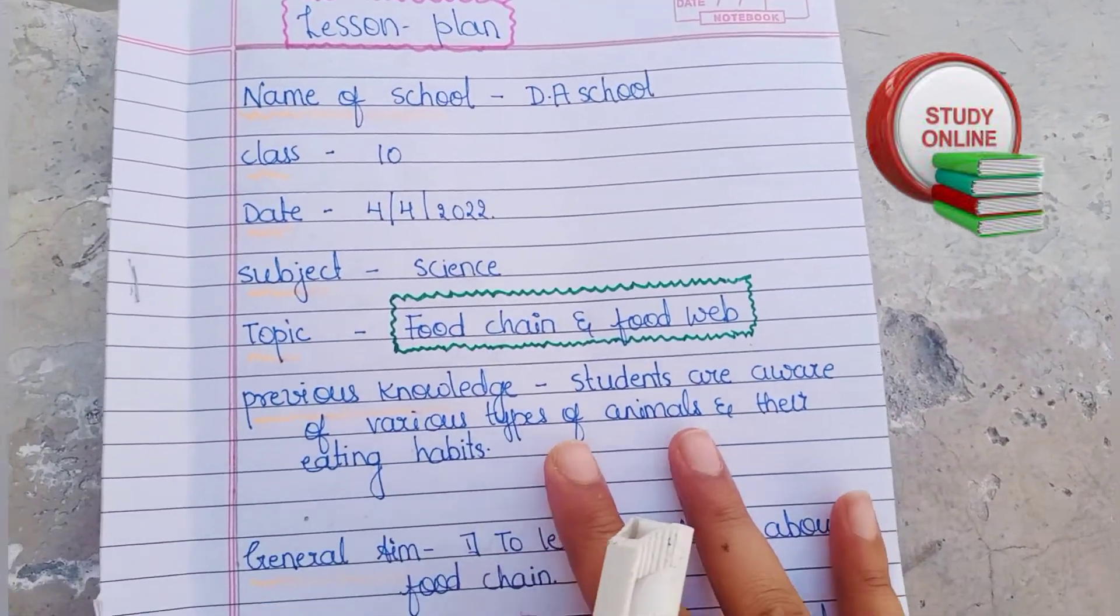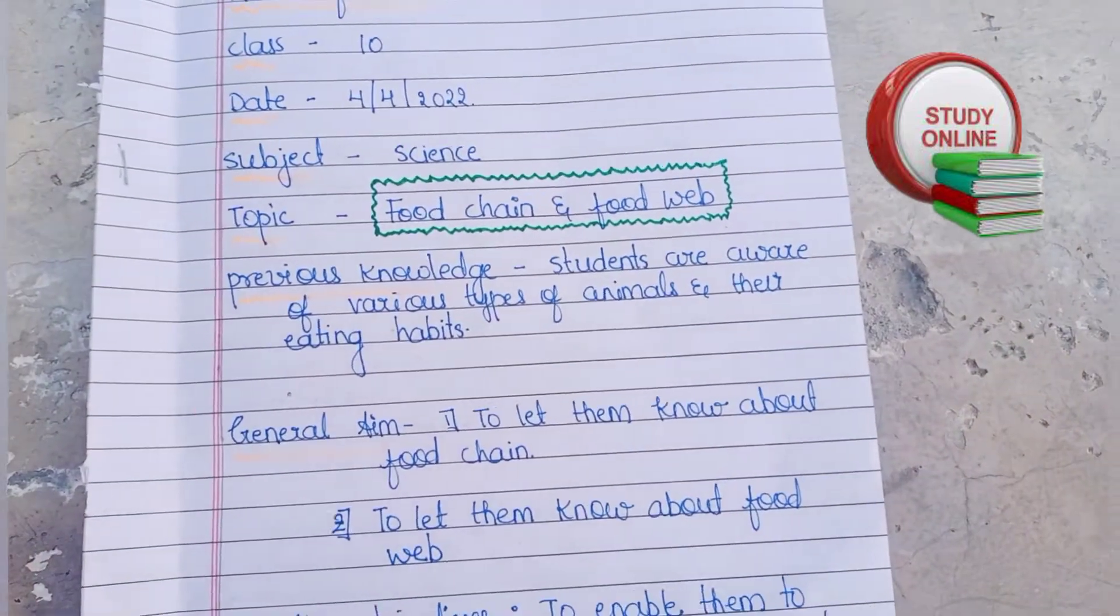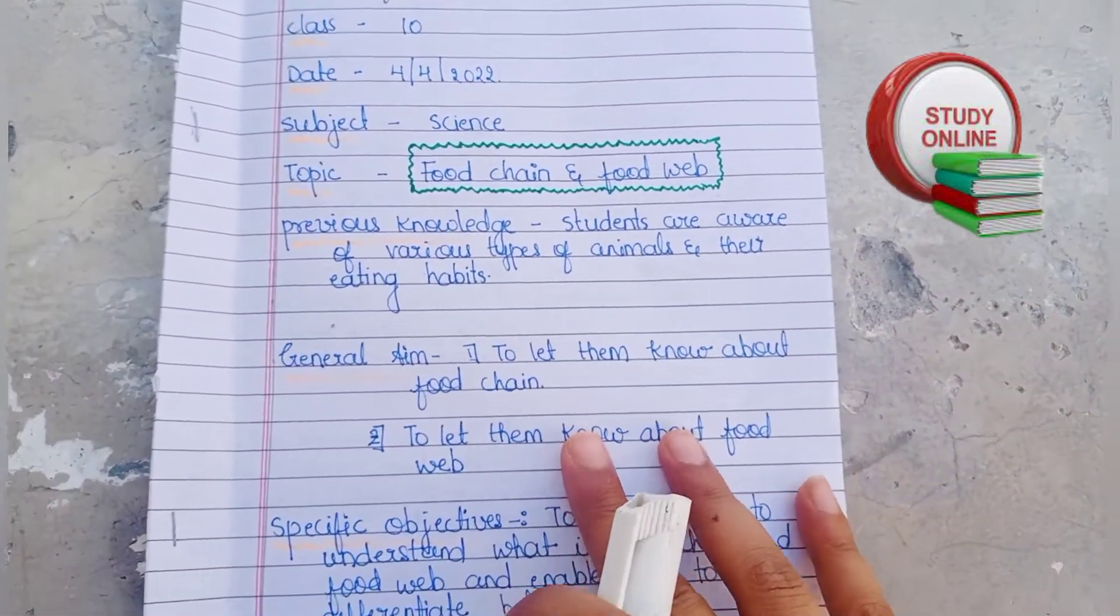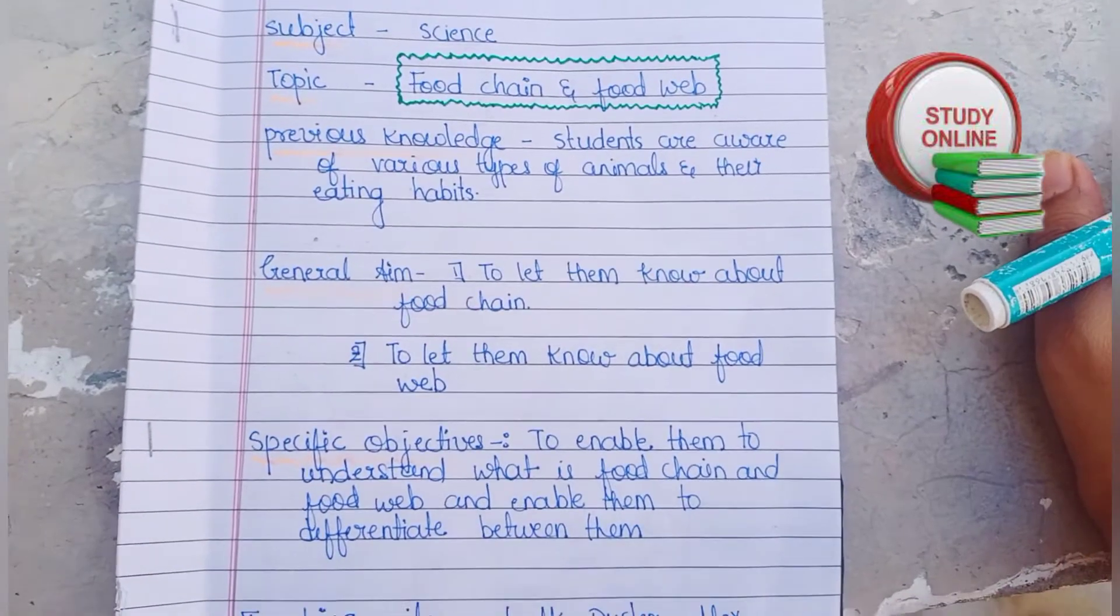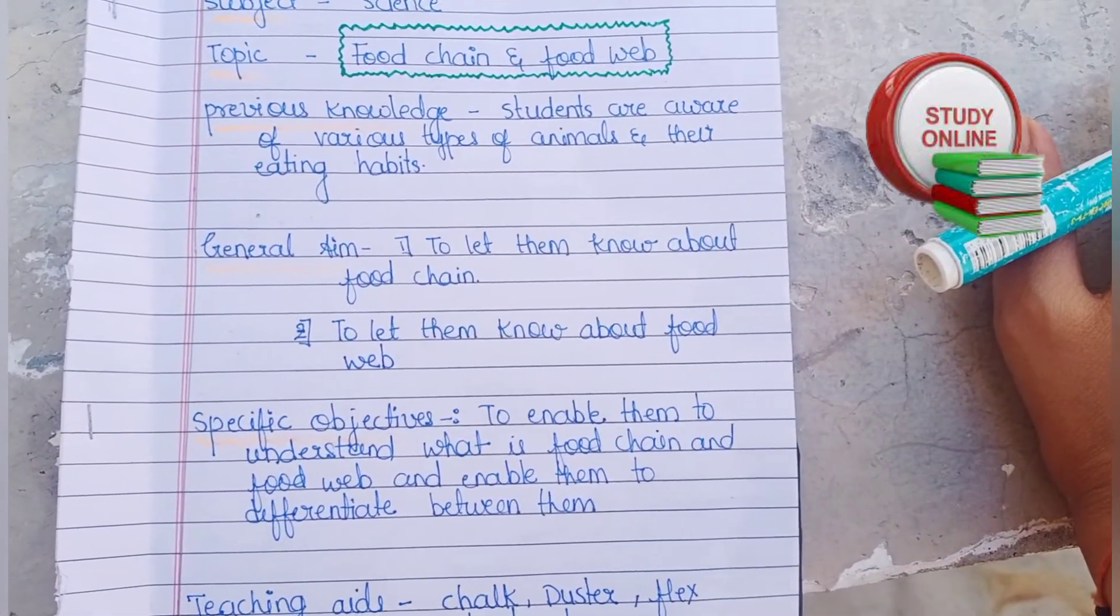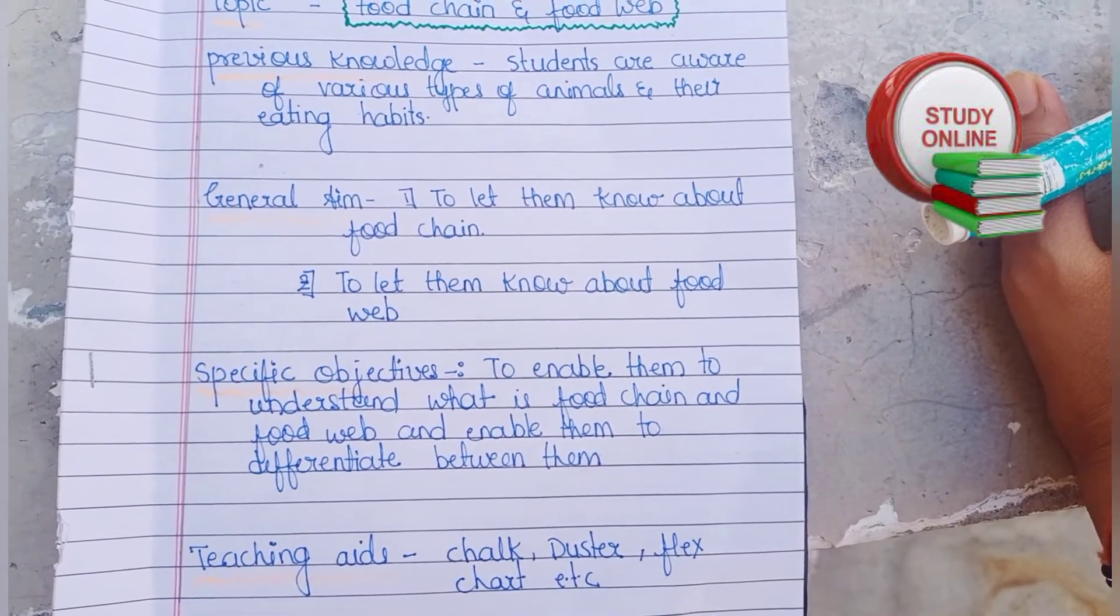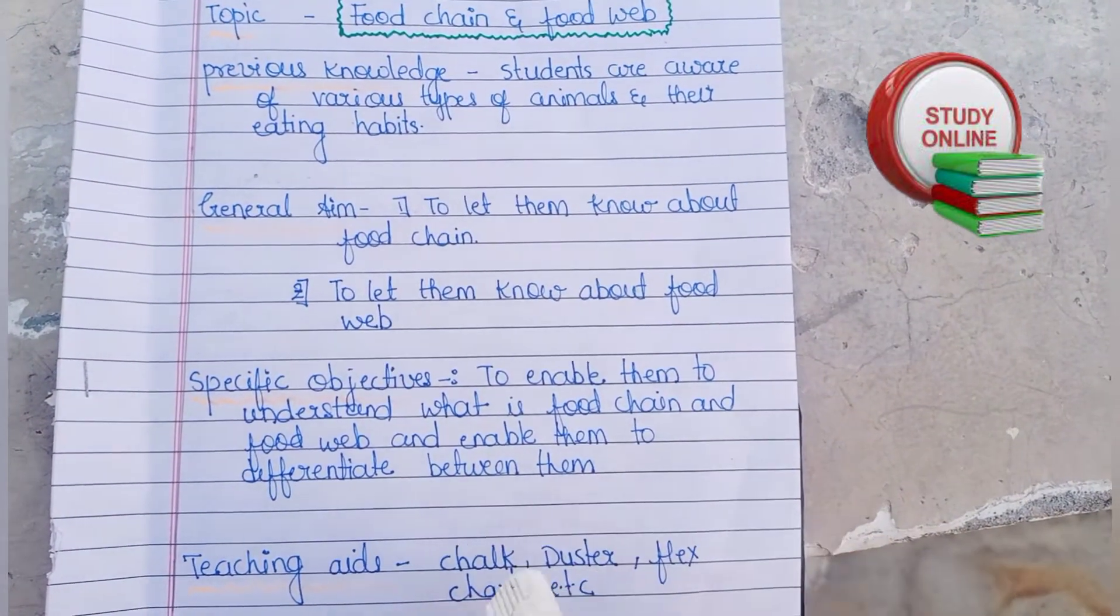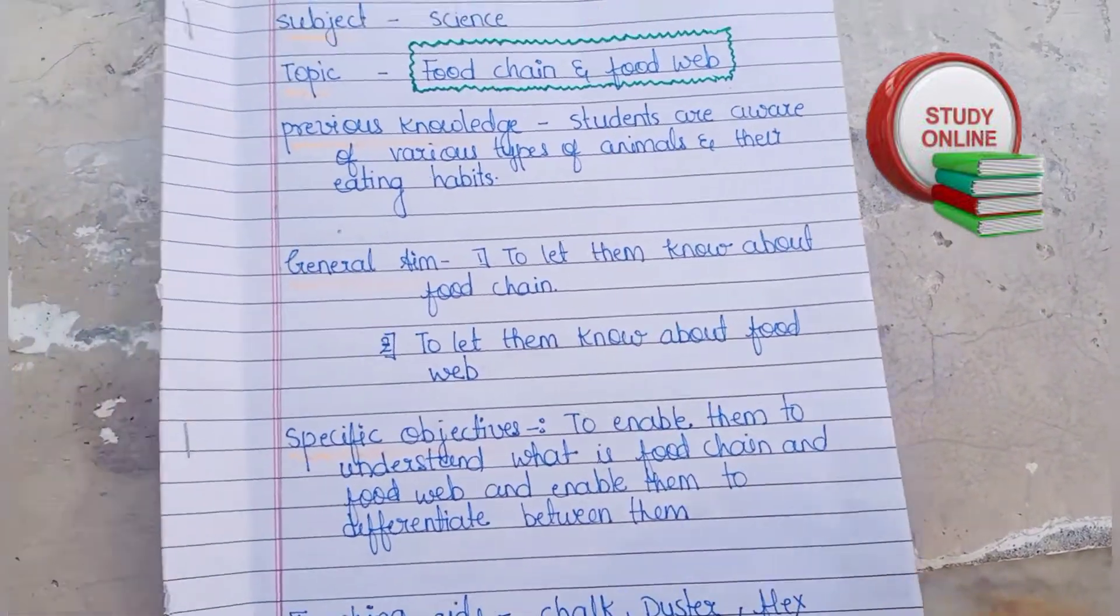class 10. You can see this format. If you need the PDF, just comment 'yes' in the comment section below. Now you can see previous knowledge, general aim, specific objectives, and teaching aids like chalk, duster, and flex chart.